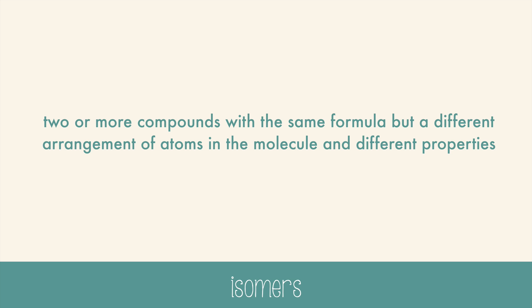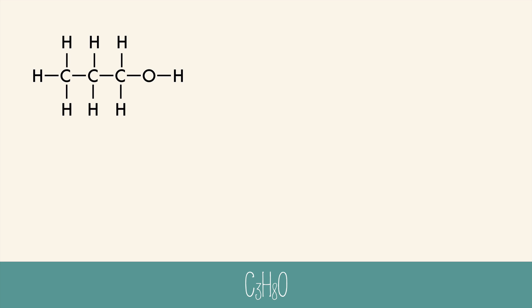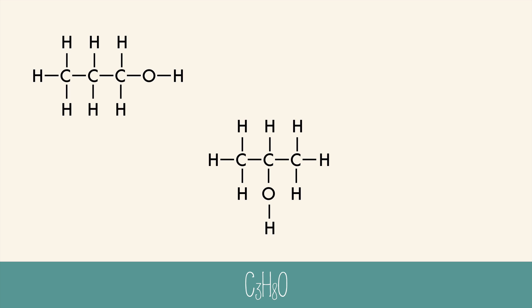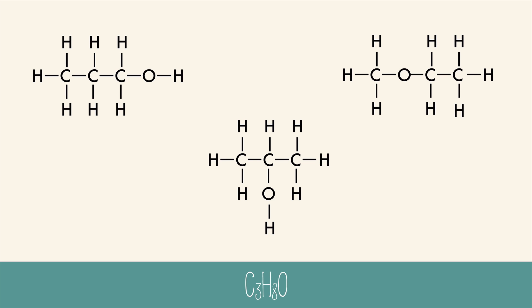Let's look at another example. Take the molecular formula C3H8O. There are three possible isomers for this formula. The oxygen can be at the end of a carbon chain, or it can come off of the central carbon, or it can be in between the carbon chain itself. There are no other possible isomers for this formula, just these three.